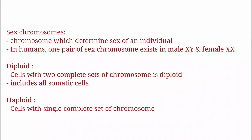The second term is sex chromosomes. Autosomes are chromosomes other than sex chromosomes; sex chromosomes are the chromosomes that determine the sex of an individual. In humans, one pair of chromosomes exists in males — that is X and Y — whereas for females it is XX.